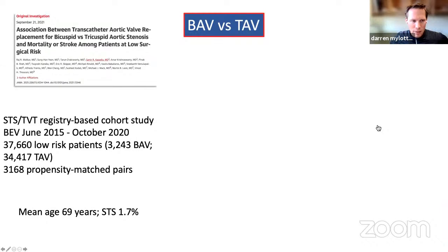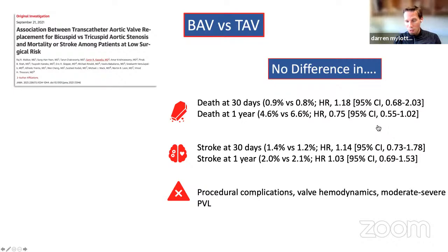Looking at two more contemporary studies: Raj published this only in September — an important STS/TVT-based registry of patients undergoing balloon expandable valves between June 2015 and October 2020. Among 37,000 patients, they propensity-matched 3,168 BAV and TAV patients, mean age 69, STS scores 1.7%. Very surprisingly, they found no difference in death at 30 days or one year, no difference in stroke, and no difference in procedural complications, valve hemodynamics, or moderate-to-severe PVL. This study flies in the face of most other large datasets on TAVI and bicuspid, so we must consider whether there is residual confounding.